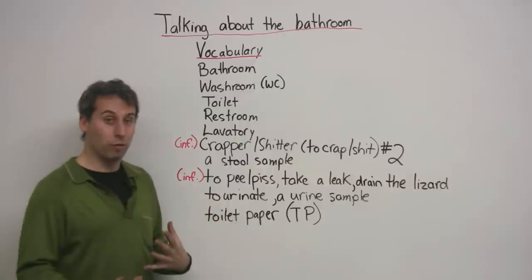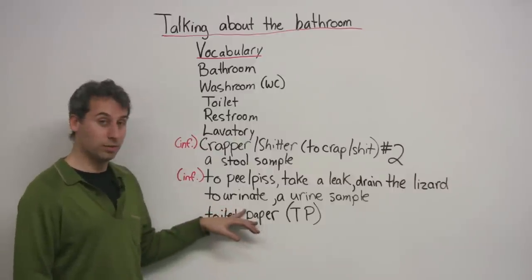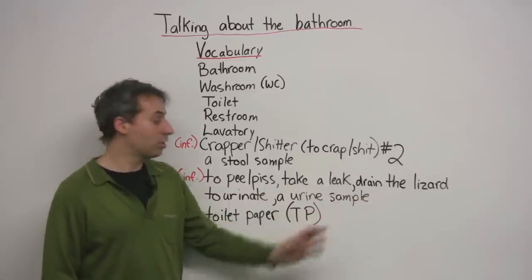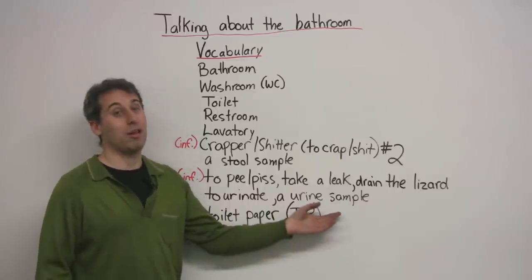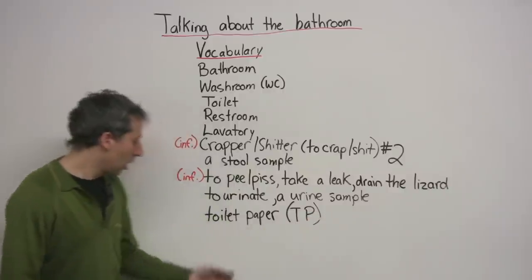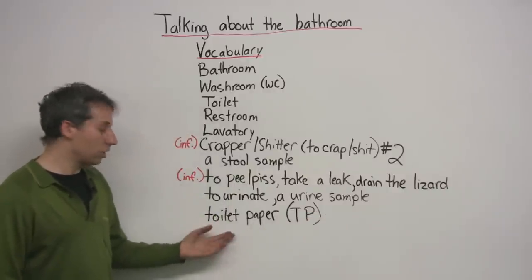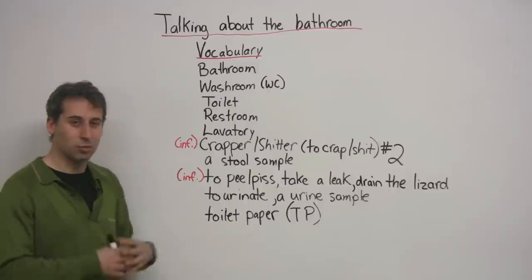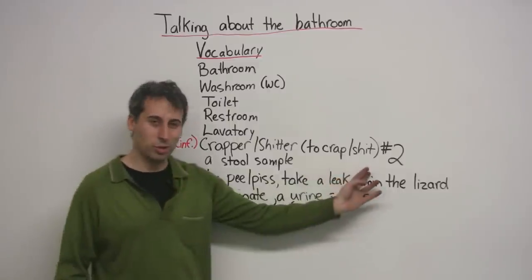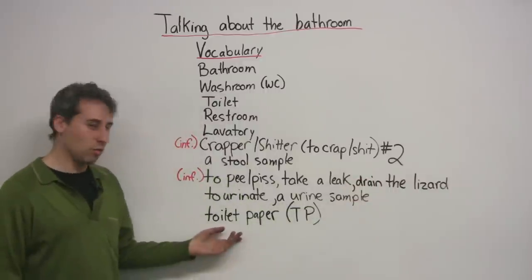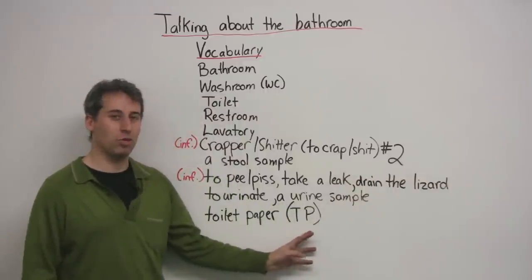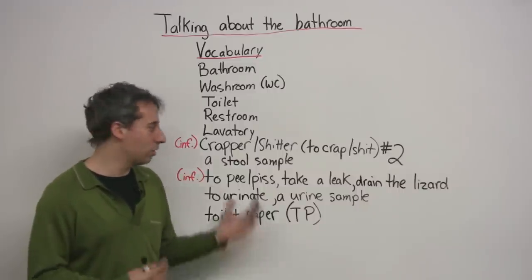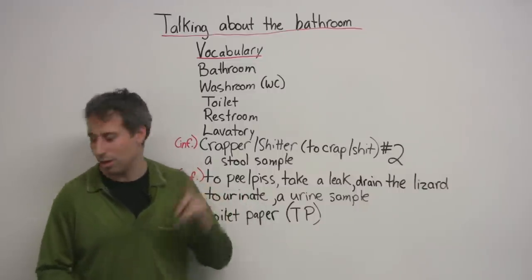A more formal way of saying it is 'to urinate,' and when you're in the doctor's office they might ask for a 'urine sample.' Toilet paper — this is what you need after you do a number two. Sometimes people also just call it 'TP.'